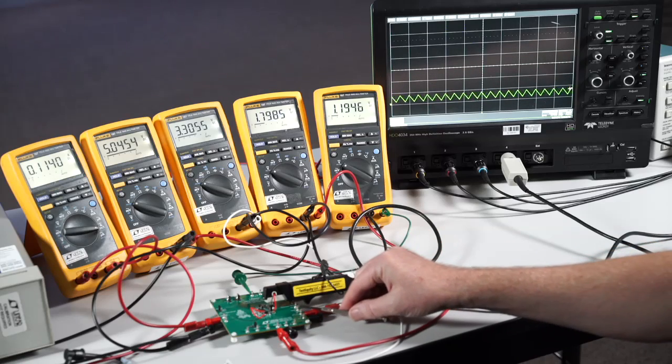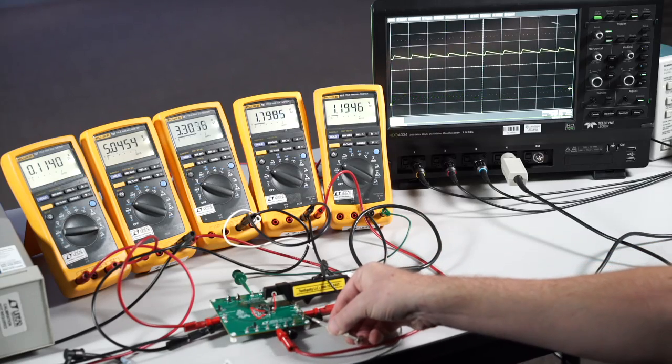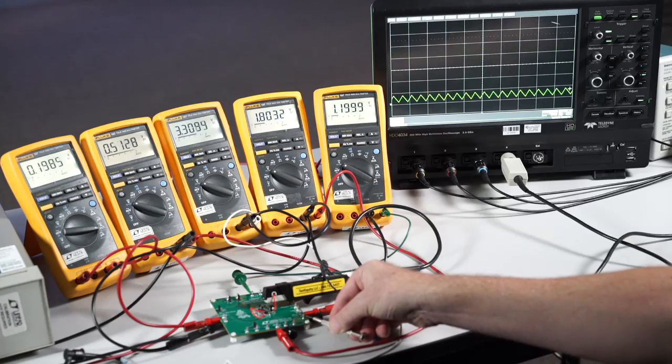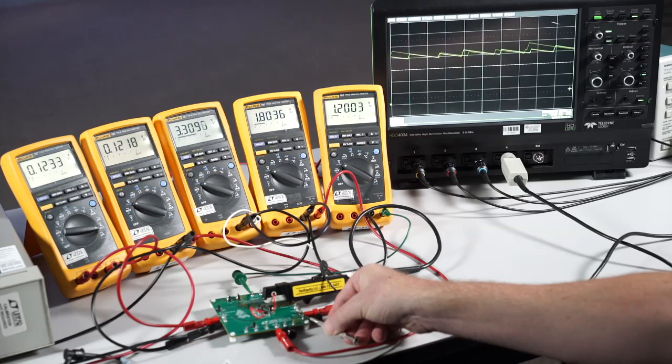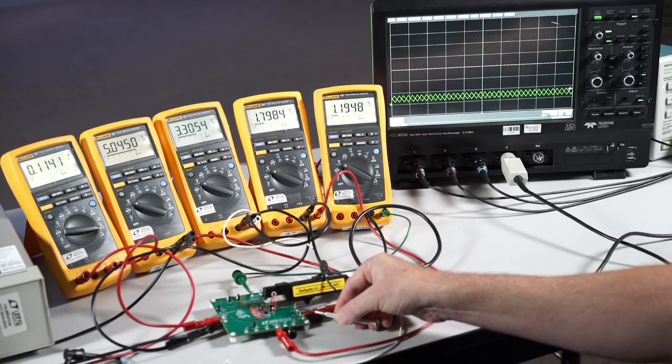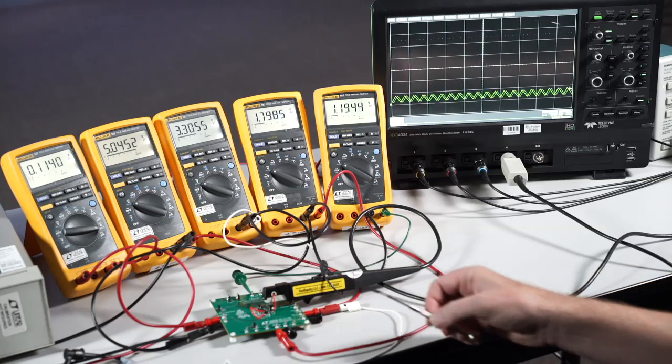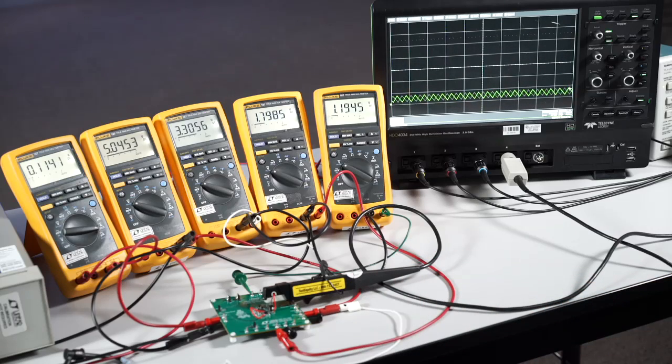Here we're monitoring inductor current. Shorting channel 1 output to ground results in a dramatic drop in operating frequency and the inductor current limiting at a safe value. The other channels are not affected. Release the short and the output returns to normal.